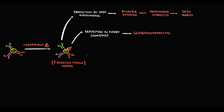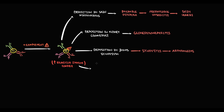Similarly, immune complexes can deposit in the synovium of joints, causing synovitis that typically manifests with articular pain. Deposition of immune complexes in the lung pleura can cause pleuritis, which typically causes dyspnea.